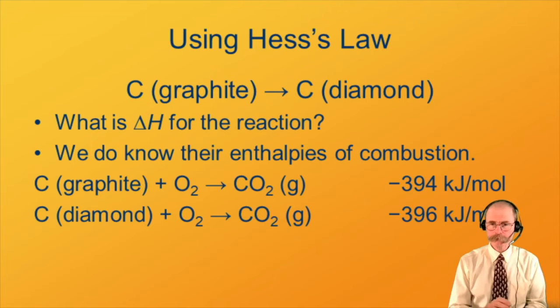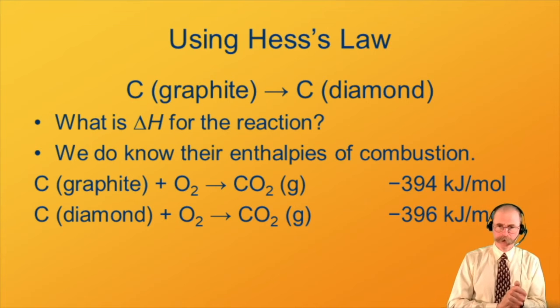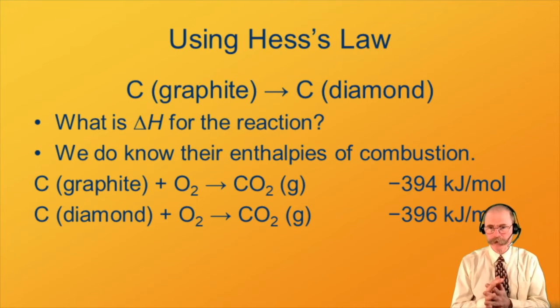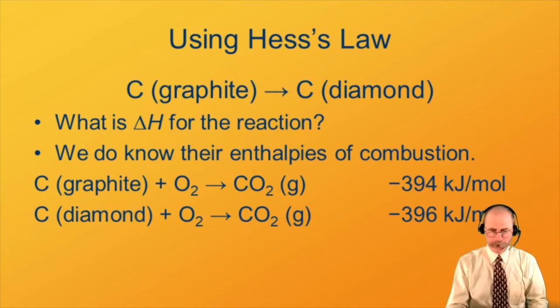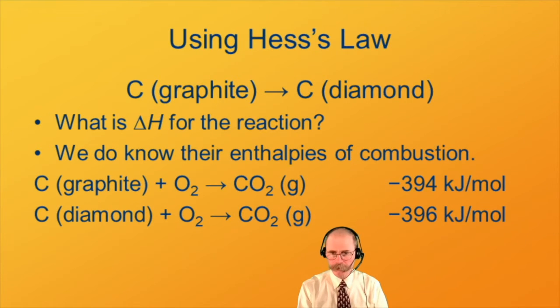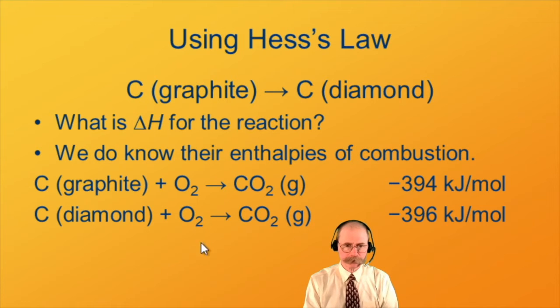Here's an example. Carbon has two common solid forms at room temperature, graphite and diamond. Graphite is the stuff in your pencil leads. What we're going to do here is calculate the heat absorbed when graphite changes into diamond. We can't do that reaction directly. What we are going to do is calculate what that energetics would be from the known enthalpies of combustion.